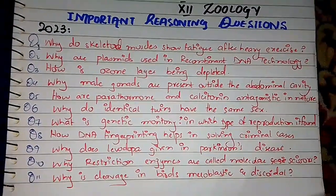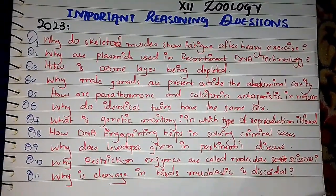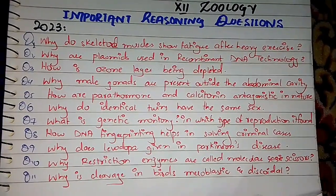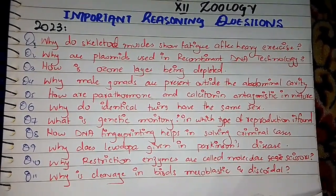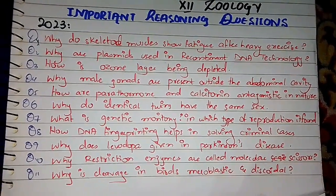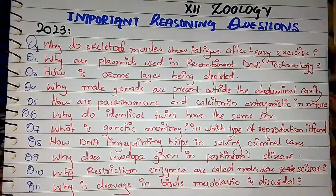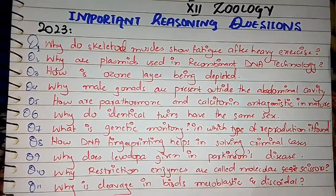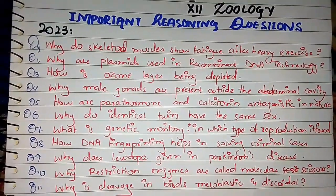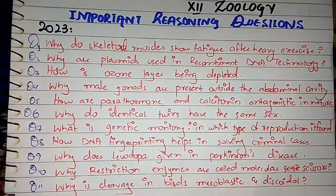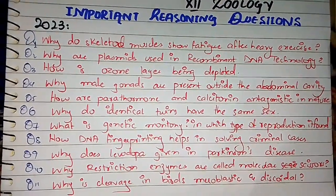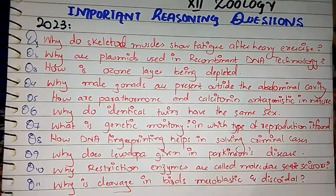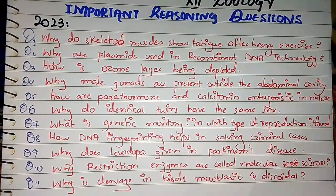Question number 10: Why are restriction enzymes called molecular scissors? We call restriction enzymes molecular scissors because they cut DNA at specific sites which produce sticky ends. That's why we call them scissors - they cut DNA into fragments.